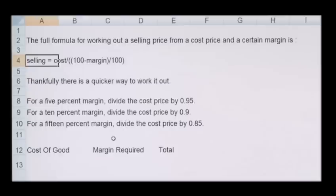A quick way to view this is as below. So if you look at a product that you want a 5% margin on, you simply divide the cost price by 1 minus 5%, so that'll be divided by 0.95.